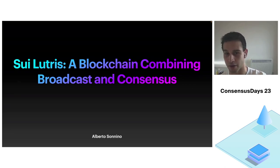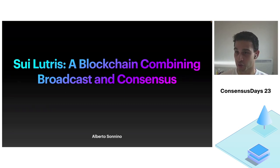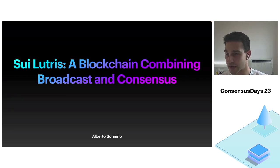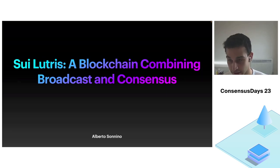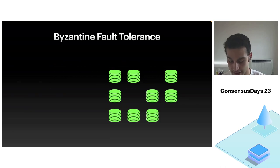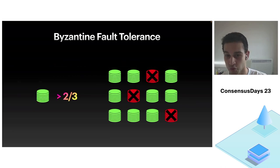The Sui blockchain is decentralized, proof of stake, permissionless — everything you like. Eventually it elects committees, and those committees have the classic Byzantine fault tolerance assumption. We assume, as usual, at most one third are bad.